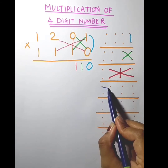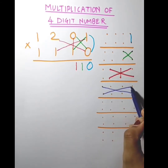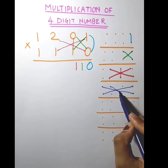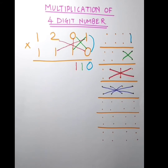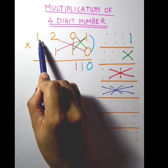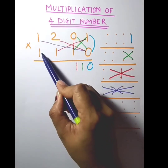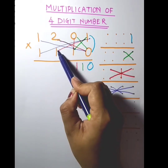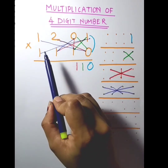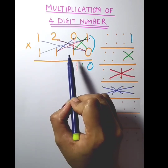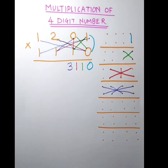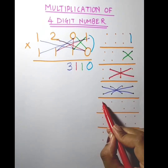Now this number into this number, plus this into this. Take the two ends first, add them, then the two middle numbers, add them. So: 1 into 0 is 0, 1 into 1 is 1, 2 into 1 is 2, and 1 into 0 is 0. So 0 plus 1 plus 2 plus 0 becomes 3. Now again these three digits reverse.